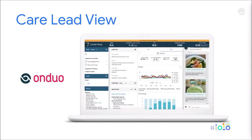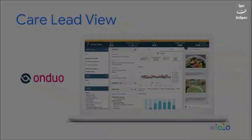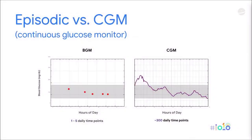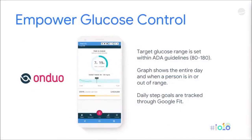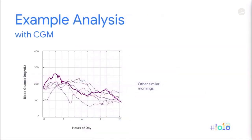This shows the difference between the data you might see in an episodic glucose example versus what you see with the continuous glucose monitor enabled by this new sensing. If we drill down into the continuous glucose monitor and look at a cluster of days, we might start to see patterns.